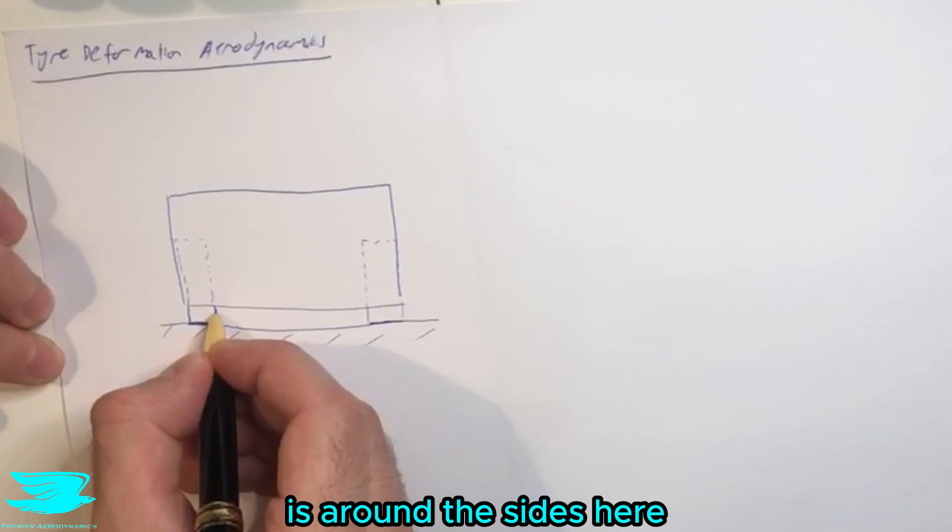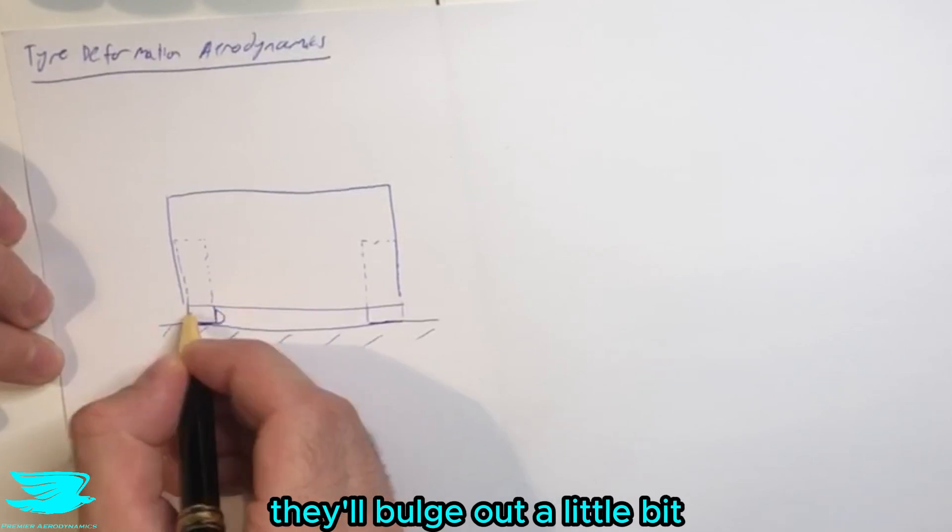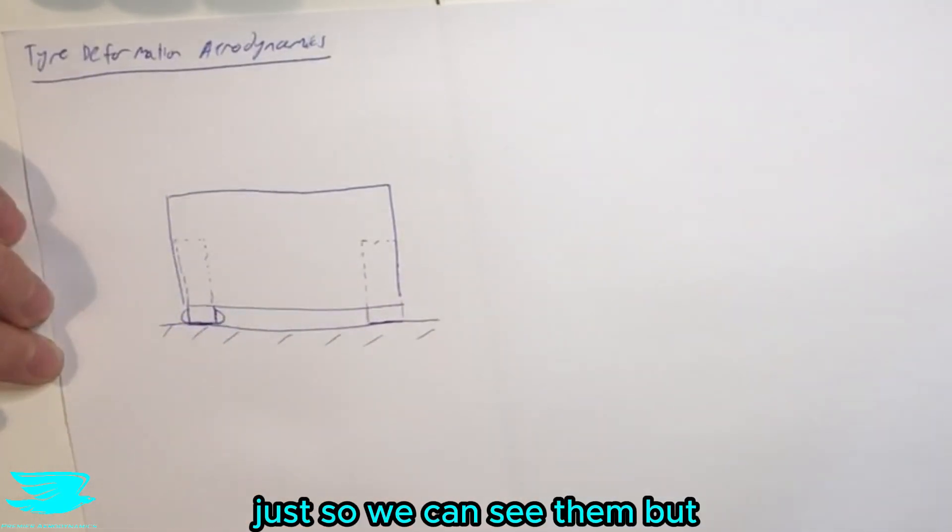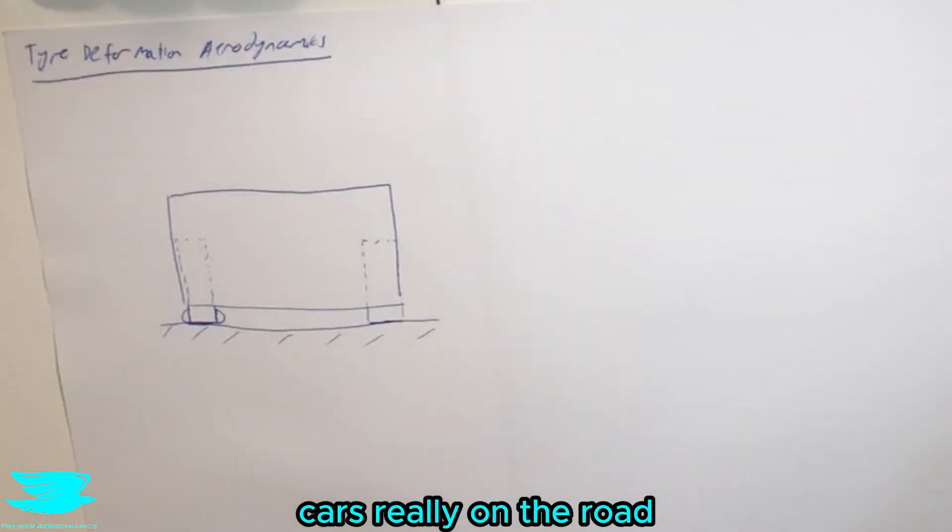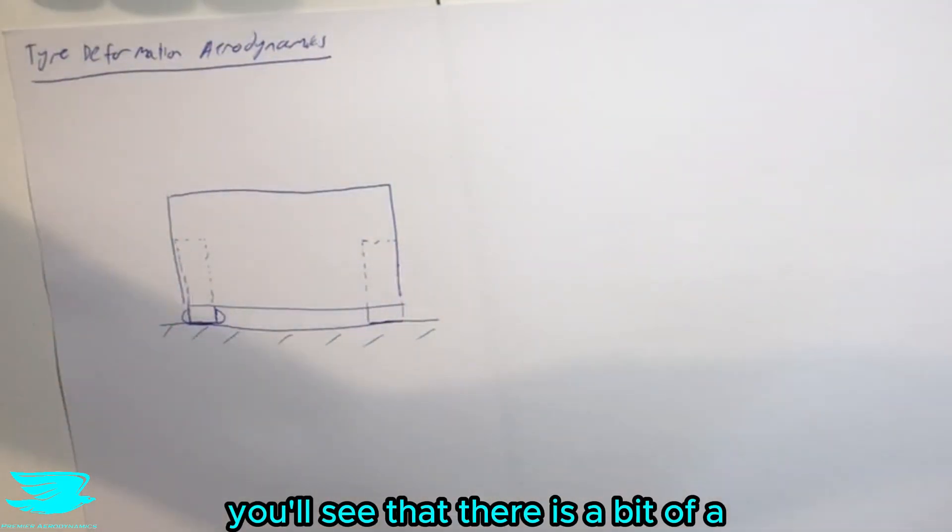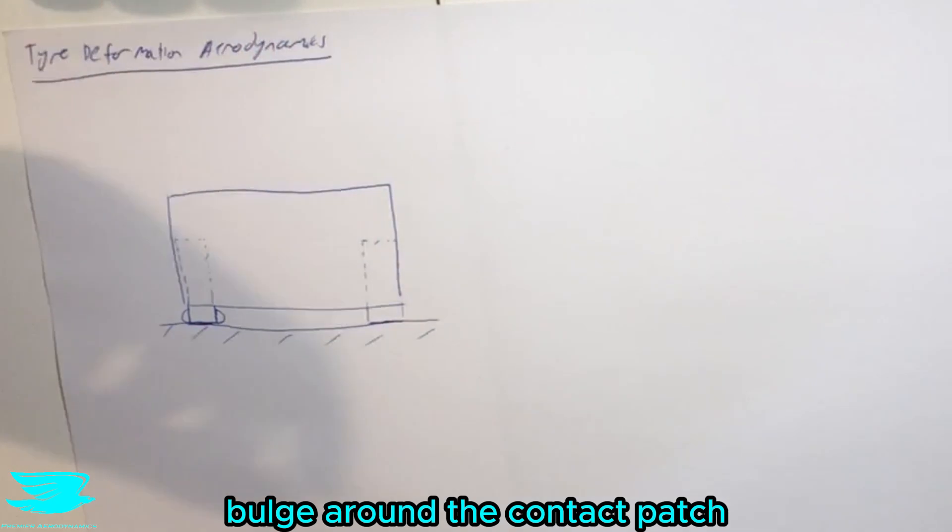Usually what will happen is around the sides here they'll bulge out a little bit, and I've exaggerated how much they bulge just so we can see them. But they do bulge out, and you can look at any cars really on the road, just even parked there, you'll see that there is a bit of a bulge around the contact patch.